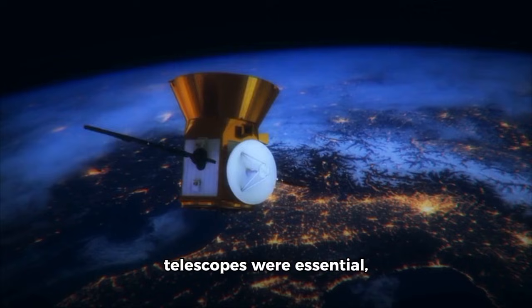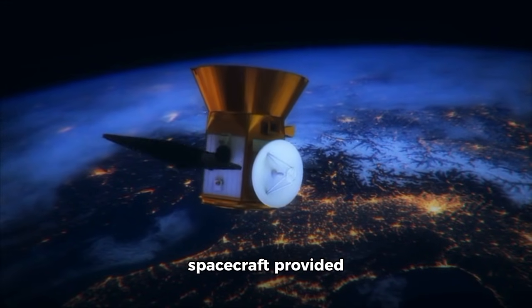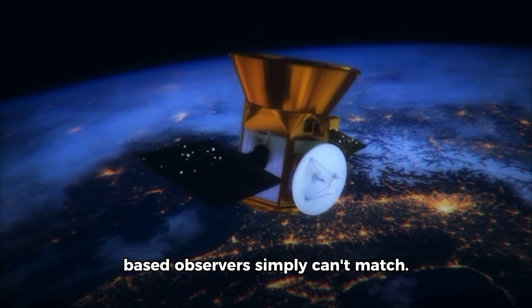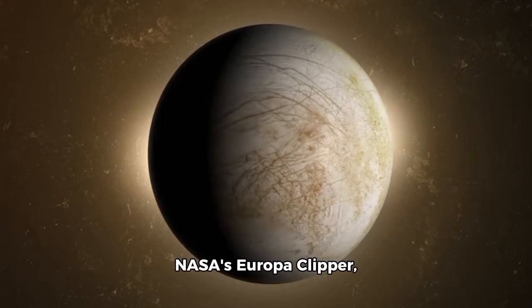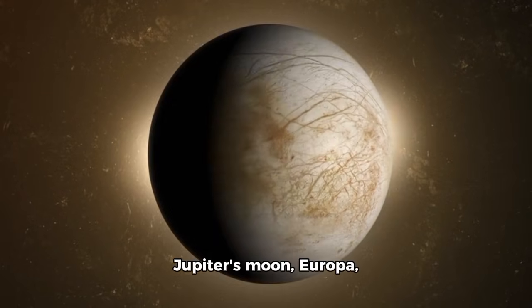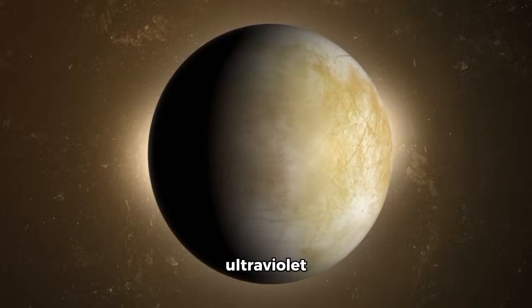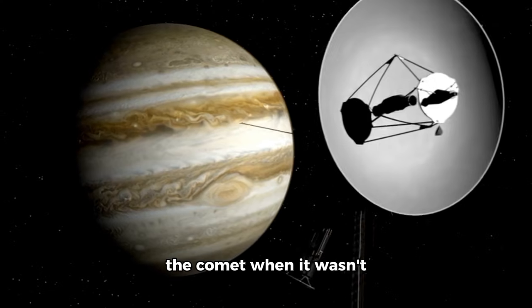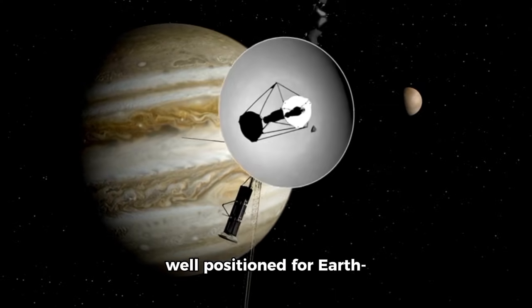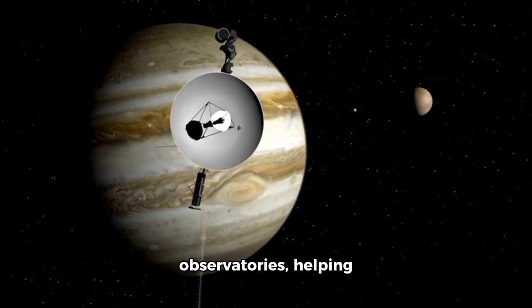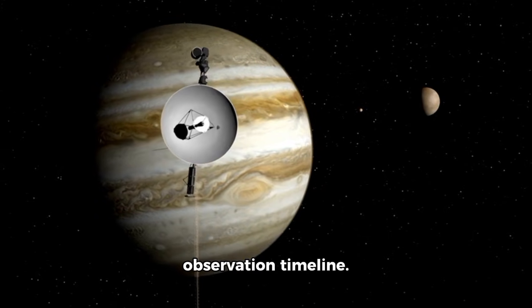While ground-based telescopes were essential, spacecraft provided perspectives that Earth-based observers simply can't match. NASA's Europa Clipper, currently on its way to Jupiter's moon Europa, observed 3I Atlas on November 6th using its ultraviolet spectrograph. Those images were released publicly yesterday, December 18th, showing the comet as a faint pale blue blob. The timing mattered. Europa Clipper observed the comet when it wasn't well positioned for Earth-based or Mars-orbiting observatories, helping fill a critical gap in the observation timeline.